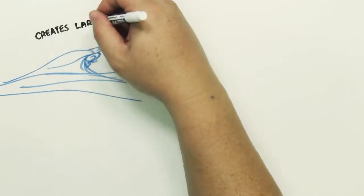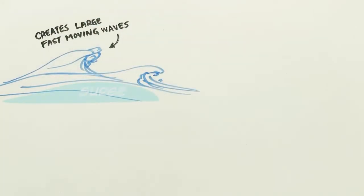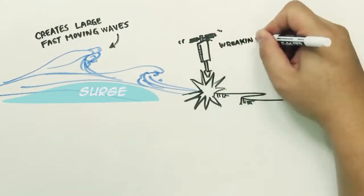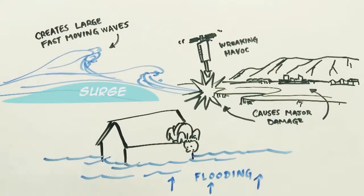In addition, large and destructive waves ride in on the top of the surge. These water surges then wreak havoc and can cause major damage and flooding many miles from the storm.